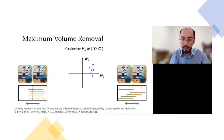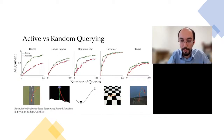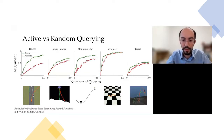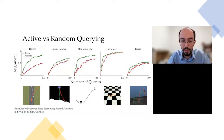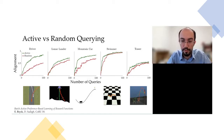A query where we almost already know the user's choice is not very informative — in expectation, we won't be able to remove much volume. A better query is one where our model is more uncertain — regardless of which trajectory the human chooses, we remove a good amount of volume. The maximum volume removal objective tries to evenly distribute the probabilities across the two trajectories. We implemented this active querying approach on simulations and it significantly improved data efficiency across benchmark environments including driving simulators and environments from OpenAI Gym and MuJoCo.